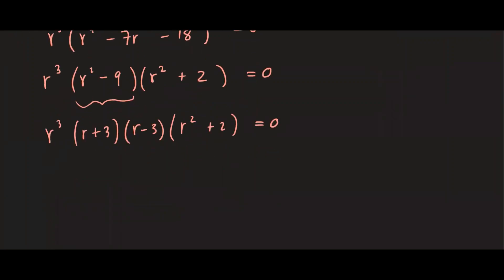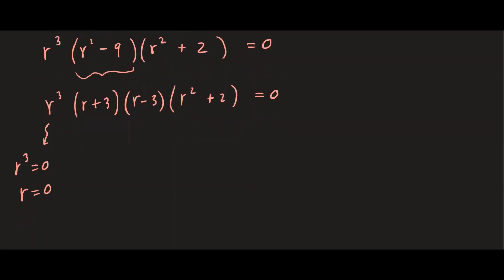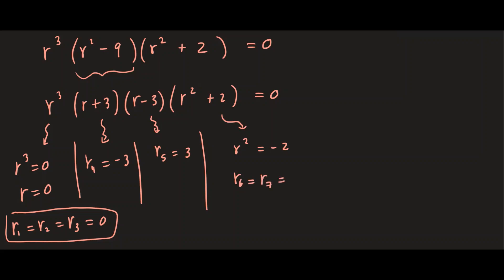Setting r cubed equal to zero gives r equals zero — three repeated roots, so r₁, r₂, and r₃ are all zero. Setting r plus three to zero gives r₄ equals negative three, and r minus three to zero gives r₅ equals three. Setting r squared plus two to zero gives r squared equals negative two; taking the square root yields complex roots r₆ and r₇, which are complex conjugates plus and minus square root of two i.